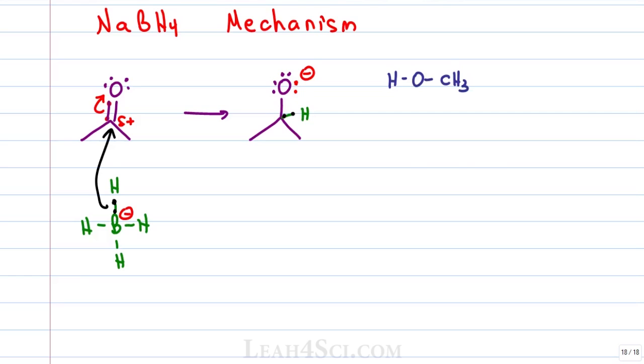The negative oxygen on our molecule will reach for that partially positive hydrogen atom collapsing those electrons onto the oxygen. We'll show these electrons now as a bond between oxygen and the hydrogen it grabbed from the solvent for a final product that is a secondary alcohol.